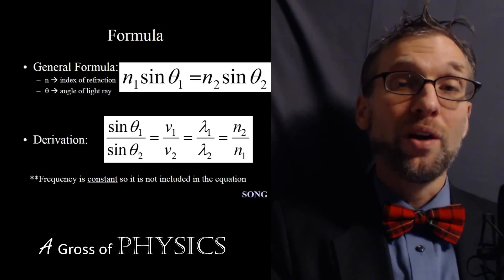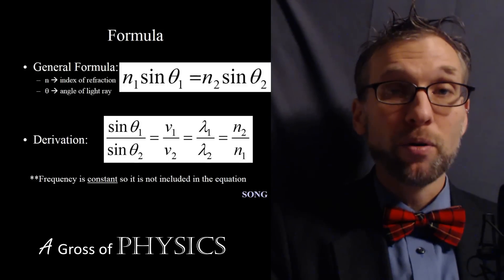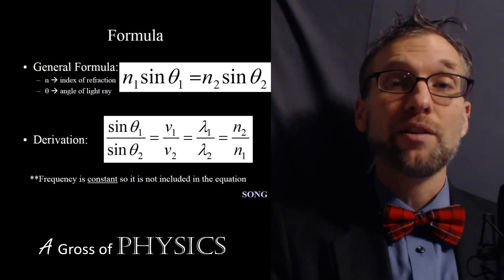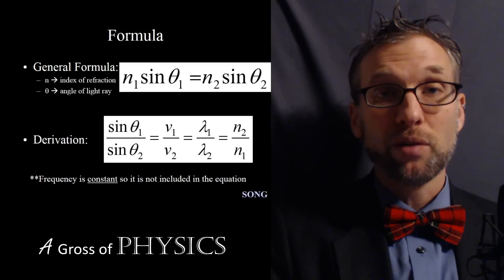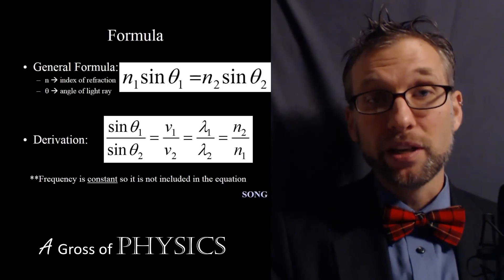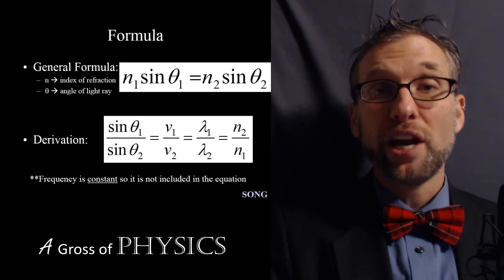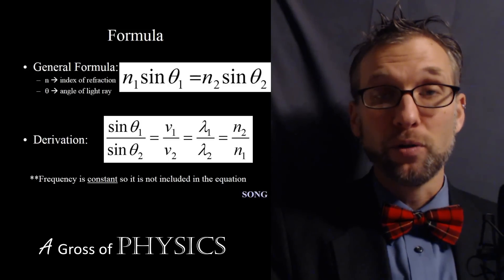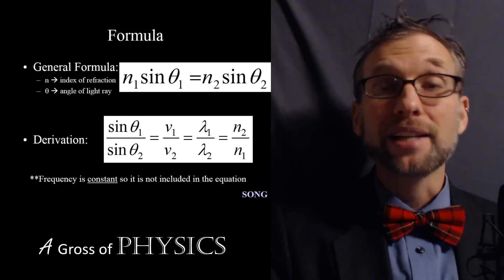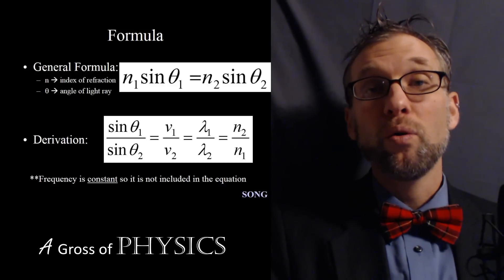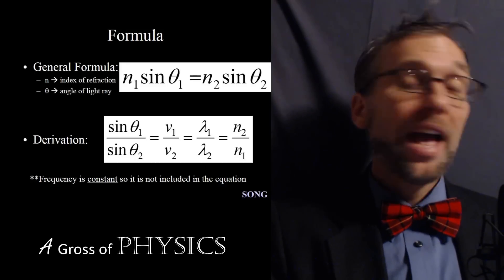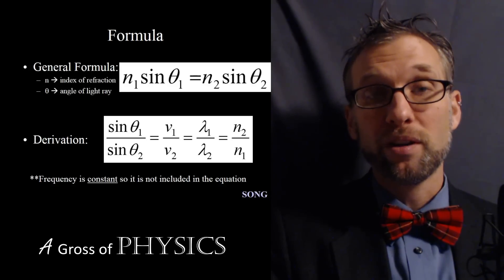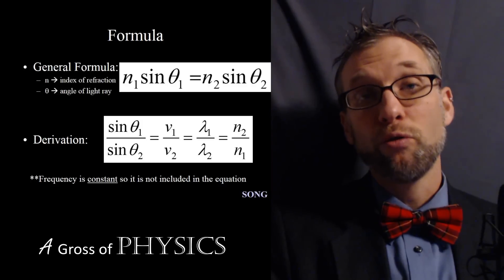Frequency is not part of this equation because the frequency of light does not change even when it refracts. So when light slows down or speeds up, the one thing that stays the same is the frequency. When we talk about frequency, we're talking about the color of the light. The color of an object doesn't change when you go into a swimming pool — a blue bathing suit stays blue, a red one stays red. The color stays the same, although the speed and the wavelength will change. We can use either Snell's law or the modified combined version to determine whatever unknown we may have in a problem.